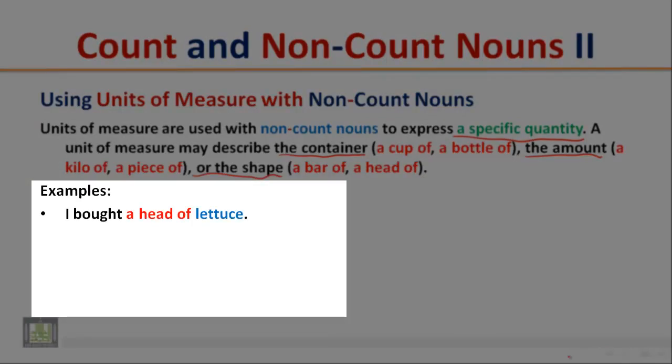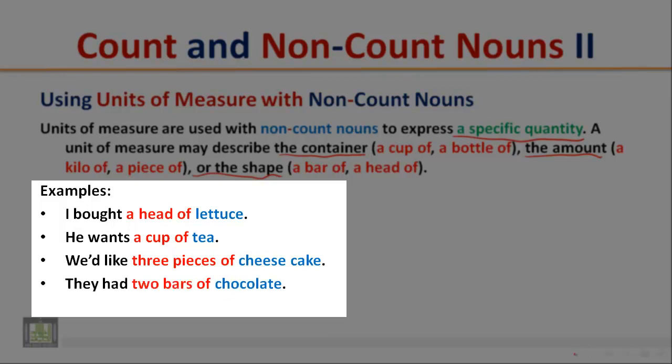Examples: I bought a head of lettuce. He wants a cup of tea. We'd like three pieces of cheesecake. They had two bars of chocolate. She needs a bottle of olive oil.